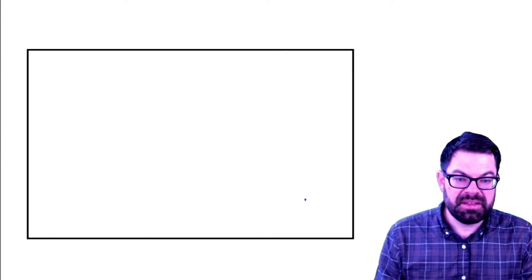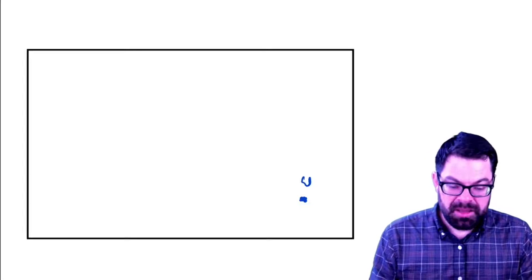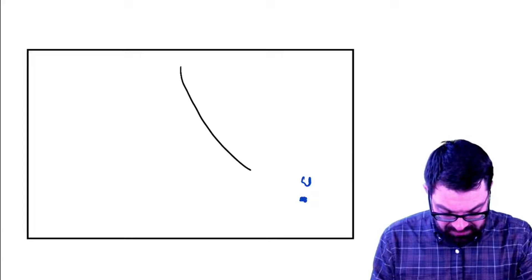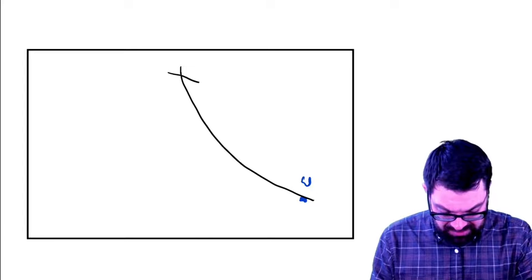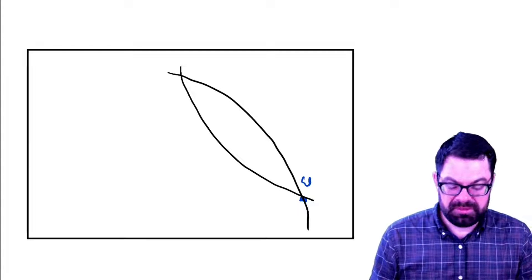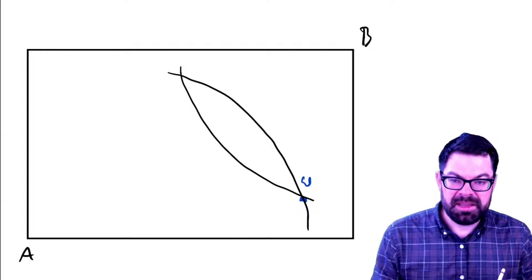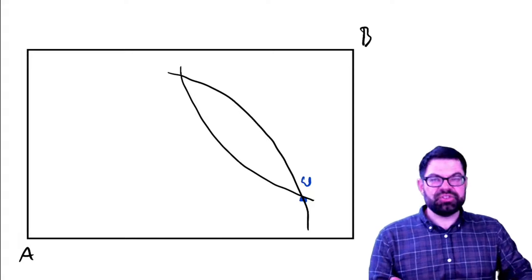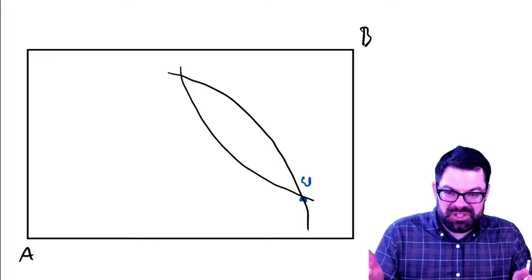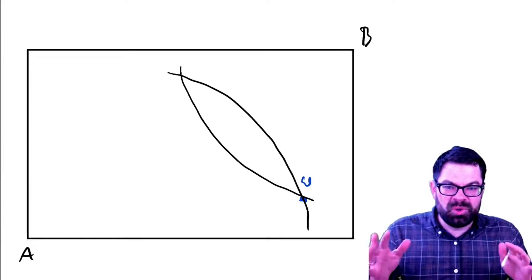Let's look again at the endowment point that was somewhere here, omega. And remember that we had indifference curves that go through this endowment point. And so, from the perspective of Andrew and Betty, clearly there are gains from trade or gains from exchange because there is this lens that opens up